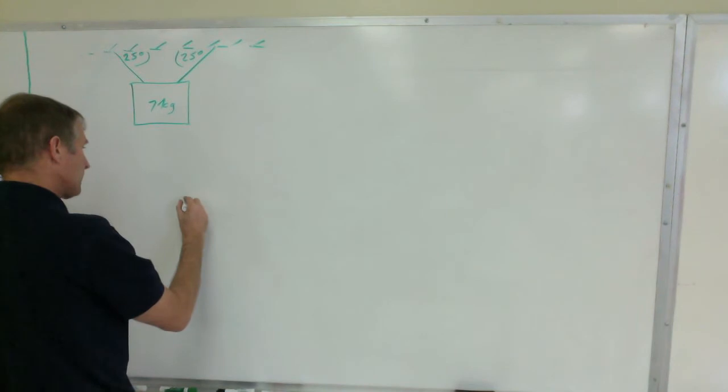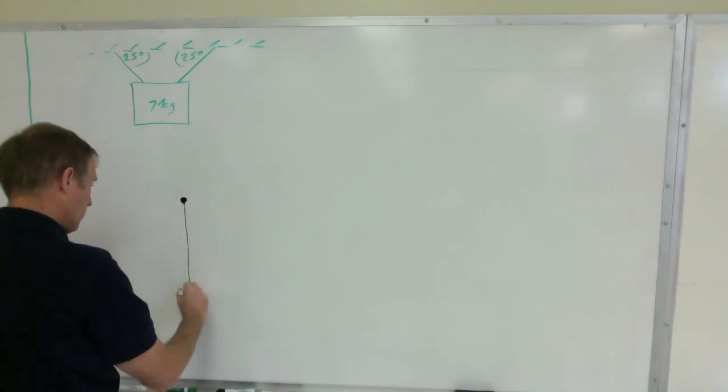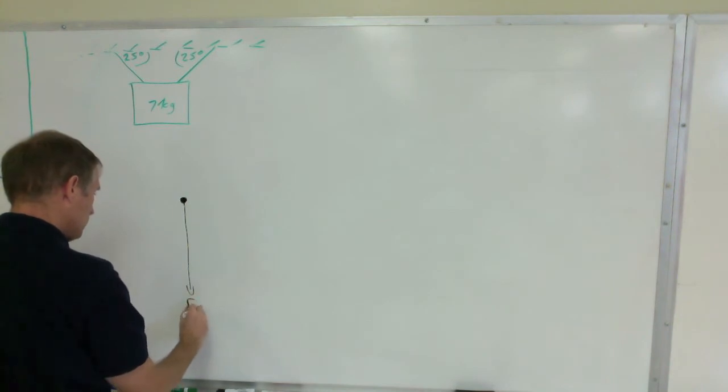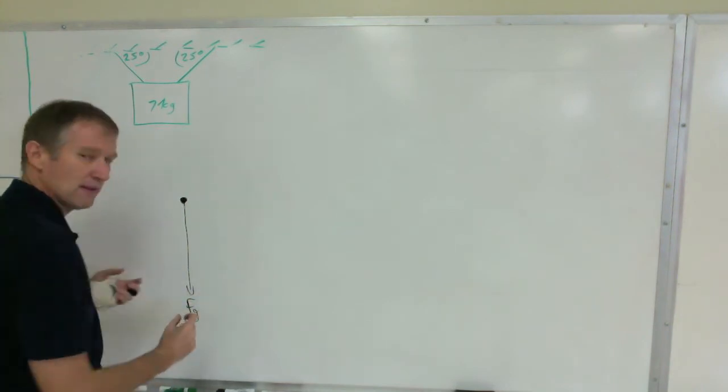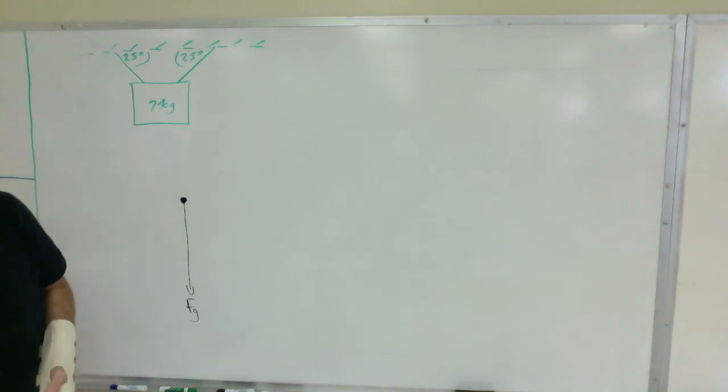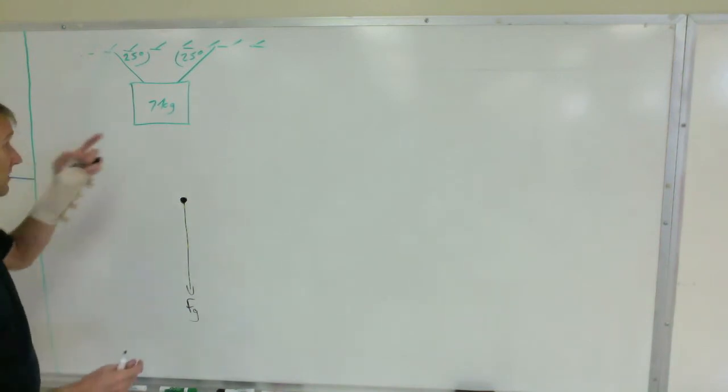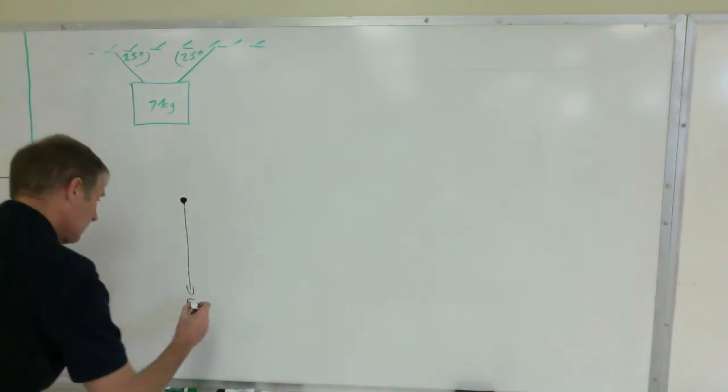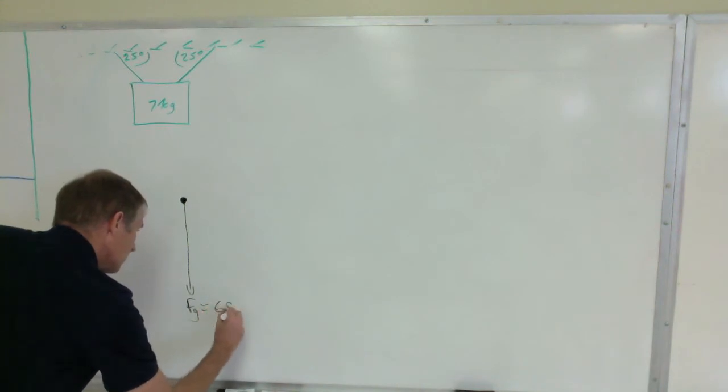Draw a force diagram, there's the dot, you got the weight. I'm going to use FG for weight, if you want to use W that's fine. That weight is 68.6, that's seven times 9.8, 68.6 newtons.